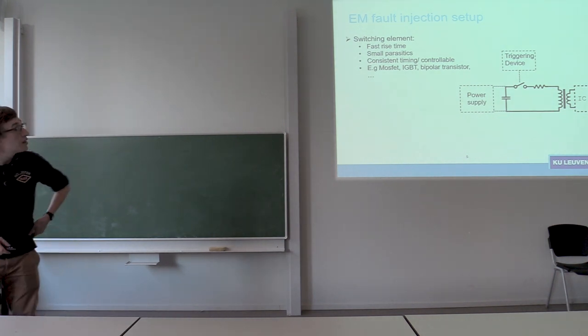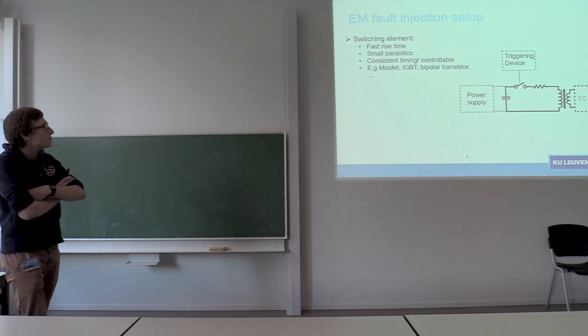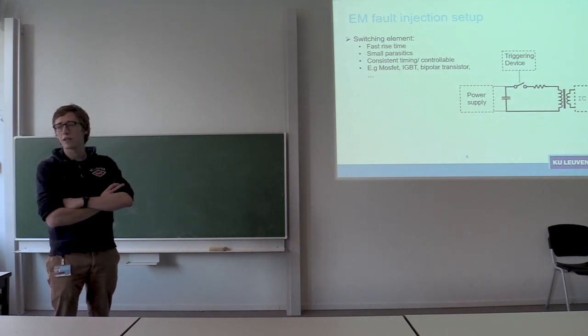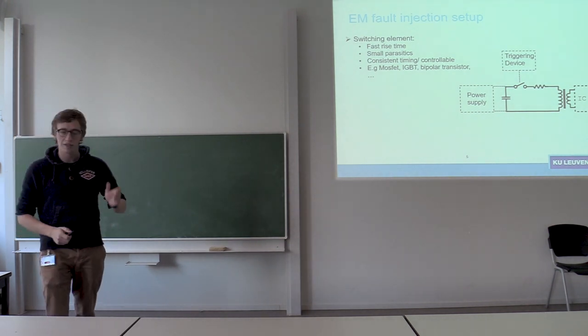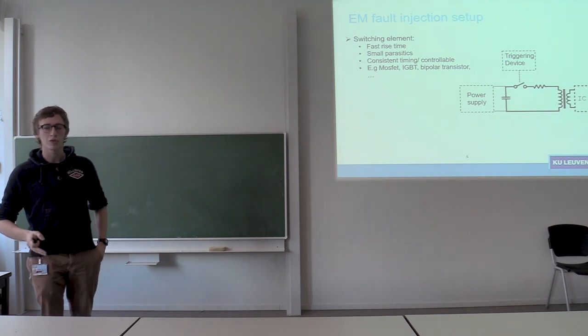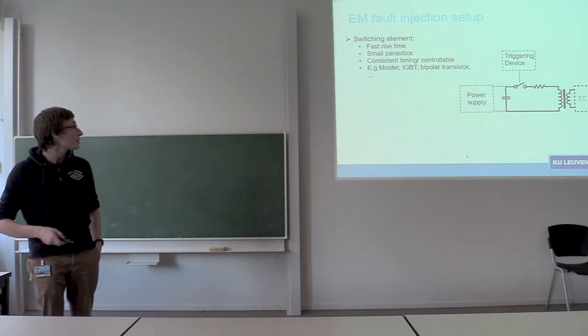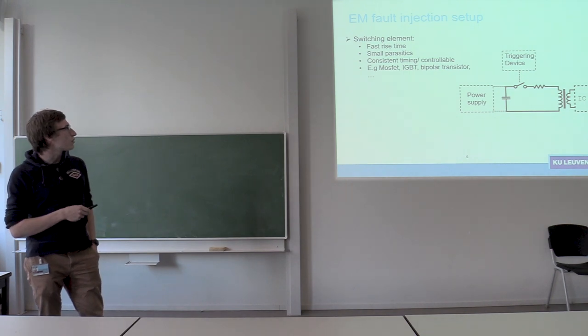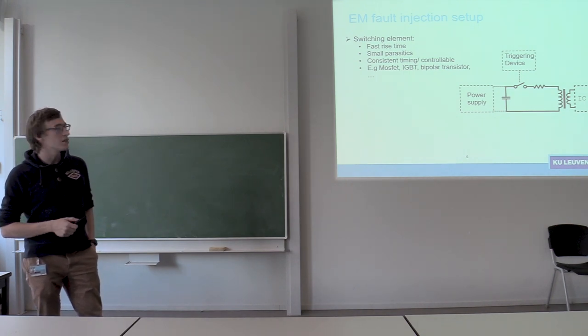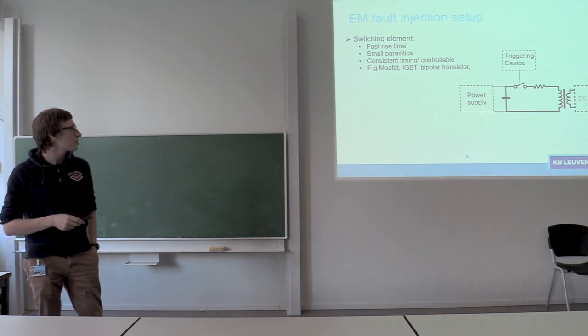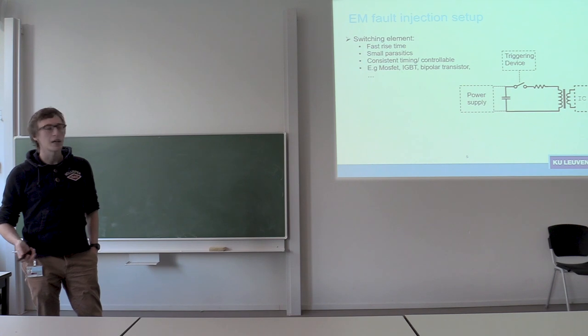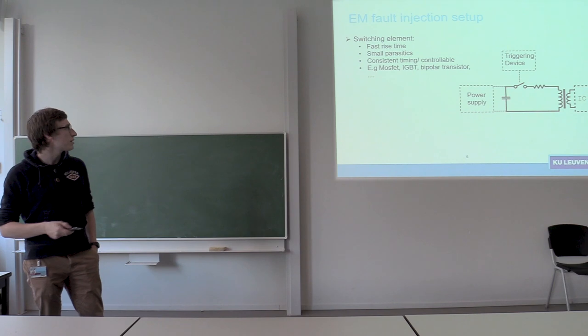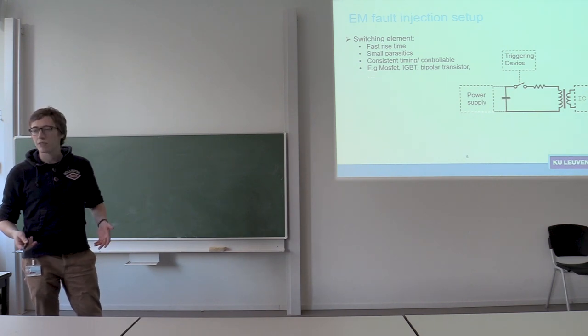So for instance for the switching element, ideally we would like an ideal switching element, which means very fast rise time, small parasitics on the switching component, consistent timing - so every time you're triggering the device, you don't want there to be a jitter of a couple of nanoseconds. And examples of this component are for instance a MOSFET and IGBT, the classic high power switching components. But there's usually a trade-off between the amount of power they can handle and the amount of parasitics they have. So the higher the currents they have to be capable of dealing with, the more parasitic capacitance for instance that they have.